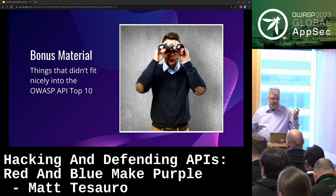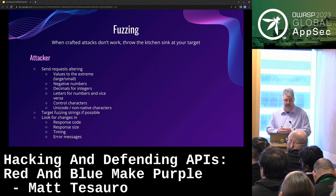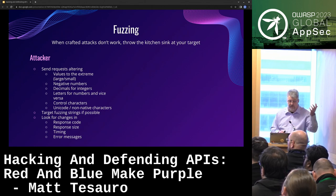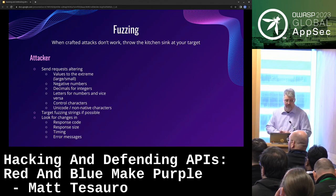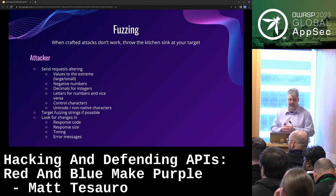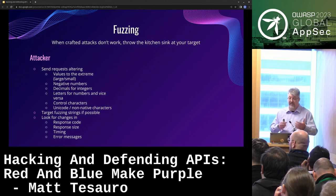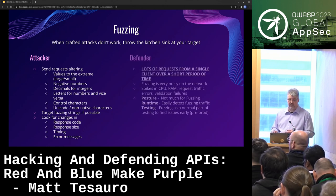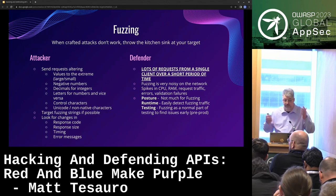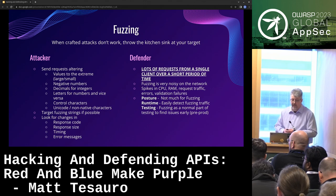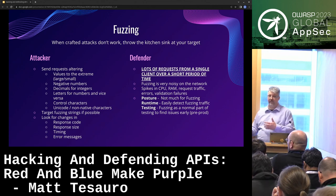A couple bonus things that didn't fit into the top ten. Fuzzing in general — as an attacker, this is a very useful technique. Play with different values: negative numbers, large decimals, integers for decimals. Non-strongly typed languages that coerce data types for you make this fun as an attacker. There are loads of text string lists you can get online — you shouldn't have to struggle for this. Response codes, response times, and error messages all give clues. As a defender, lots of requests from a single IP over a short period of time is a clear clue you're being fuzzed — this should stand out very blatantly with spikes in RAM, CPU, or requests per second.